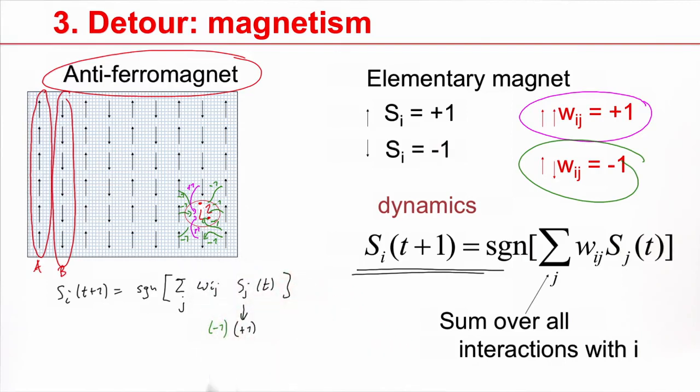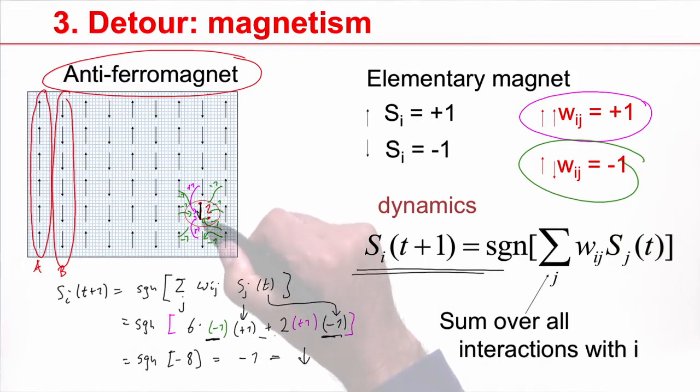How many of these do I have? Six. And then I have two others that have a value of minus one, and they come in with a weight that's positive. So in total, I have the sign of minus six, minus two, minus eight. The sign of minus eight is minus one, and this means that this needle is pointing downwards. Therefore, it's aligned with all the other needles in the same layer.